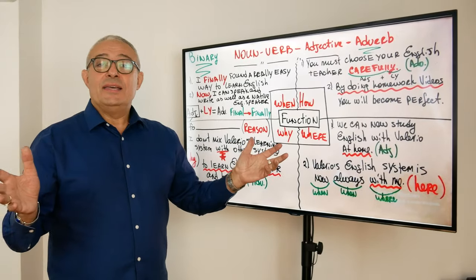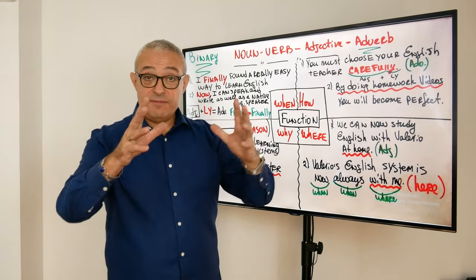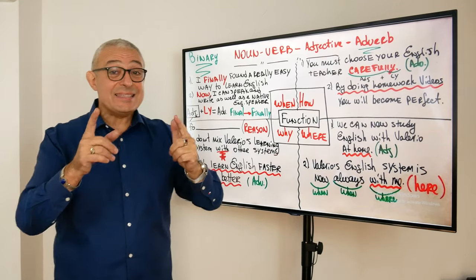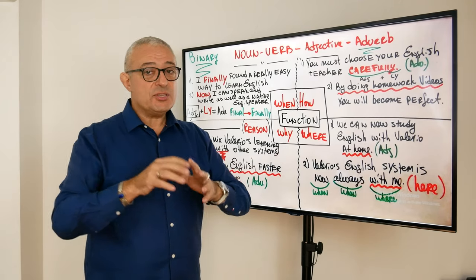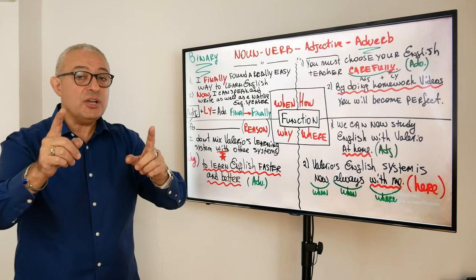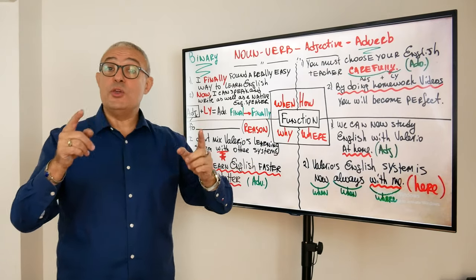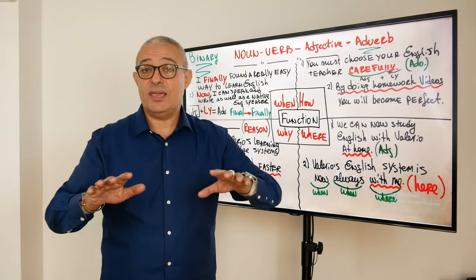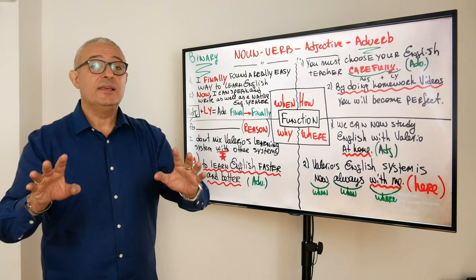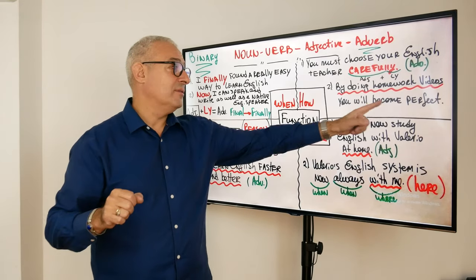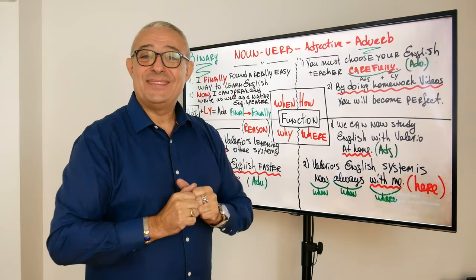The function of adverbs, as you just noticed, is to give description. Make sure you do the homework, because there is a lot more to adverbs. This video showed you the primary functions of adverbs, and there are four. Once you start doing the video homework — which is absolutely necessary and essential for you to use adverbs well — you will understand clearly how you can make your English perfect. I hope you enjoyed this video and hope to see you next time.